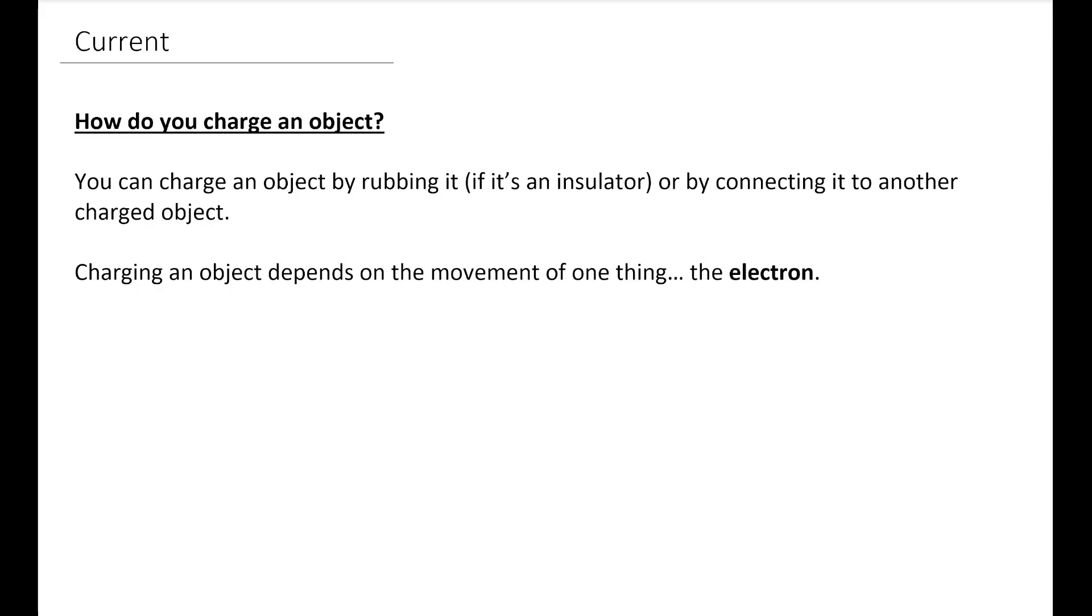We need to fundamentally understand what we mean by charge. So back at GCSE, we know that we can charge an object by rubbing it if it's an insulator or by connecting it to another charged object. And the key thing here is that we are moving electrons from one place to another. So if you move electrons off an object when you charge it by rubbing, then that object is left with an overall positive charge. And if you add electrons to an object, it gains a negative charge.